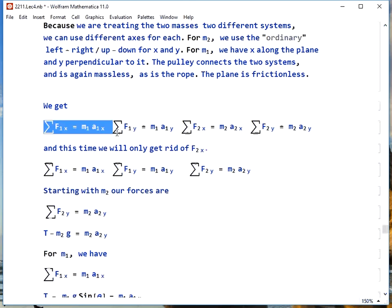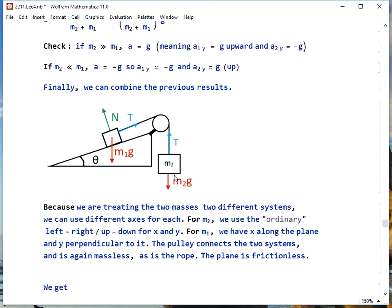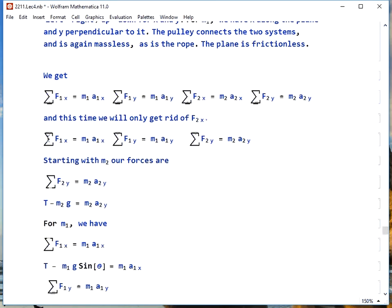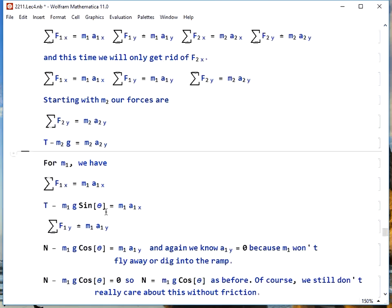So, the only one we have to get rid of here is F2x, since m2 has no x-forces on it. So, we're left with this, and we can start with m2 because it's a little bit simpler. The only forces are T and m2g, and their sum has to equal m2a2y.